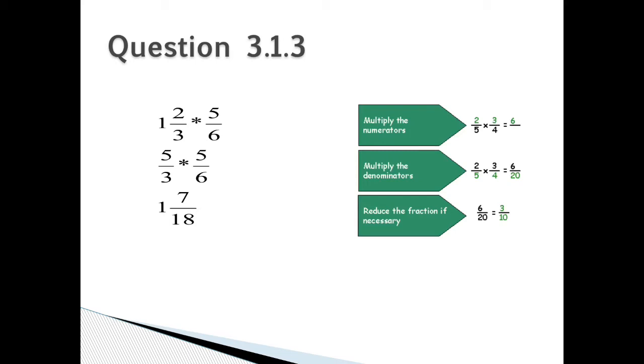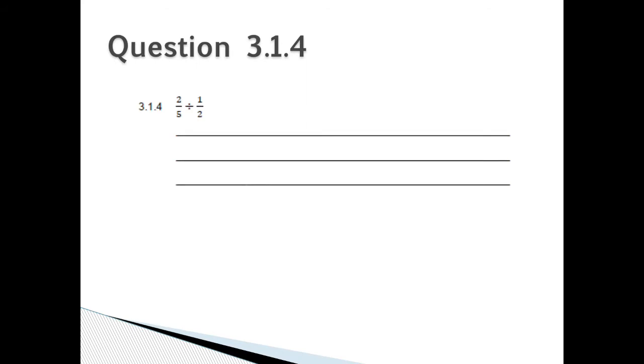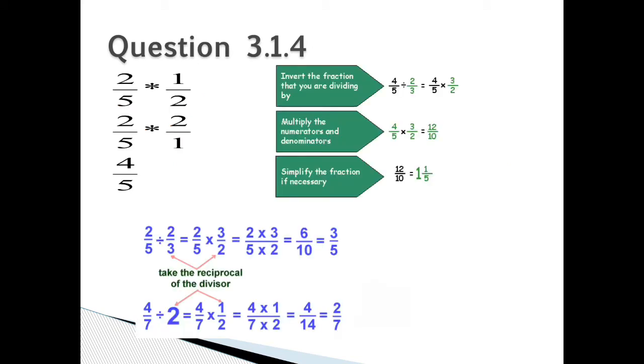Question 3.1.4: 2 over 5 divided by 1 over 2. The answer for 3.1.4: 2 over 5 divided by 1 over 2. You will invert the fraction that you are dividing by. So therefore your answer is 2 over 5 times 2 over 1. So therefore you multiply the numerators and the denominators. Therefore your final answer is 4 over 5, once you have simplified the fraction if it is necessary.